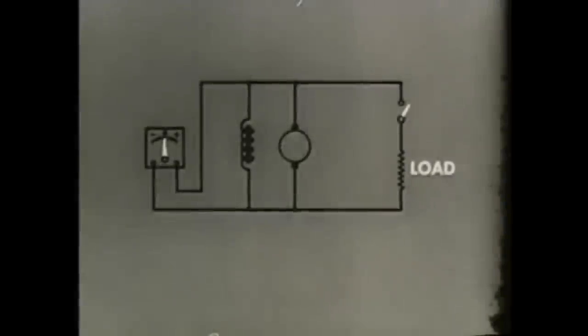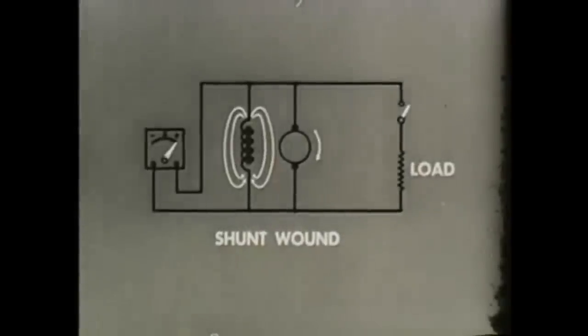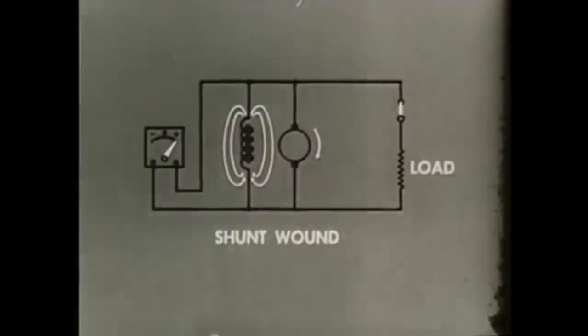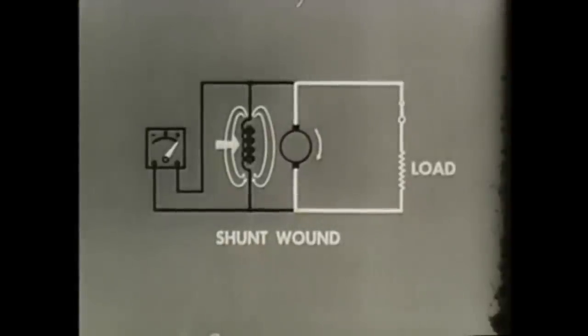And instead of in series, the field winding is connected in parallel with the armature and the load. We have a shunt-wound generator. Now the field current is independent of the load current. Therefore, an increase in armature current will not cause an increase in the voltage output. Voltage regulation here is greatly improved.